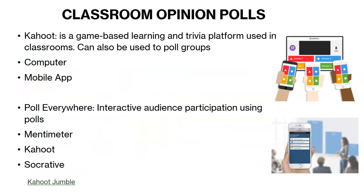Classroom opinion polls can be done using tools like Poll Everywhere, Mentimeter, Kahoot, or Socrative, on computers or smartphones. Kahoot's jumble feature is great for posing a question where learners have to prioritize steps — for example, what to do first, second, third in a patient scenario, or how to sequence steps for suctioning or inserting a catheter.